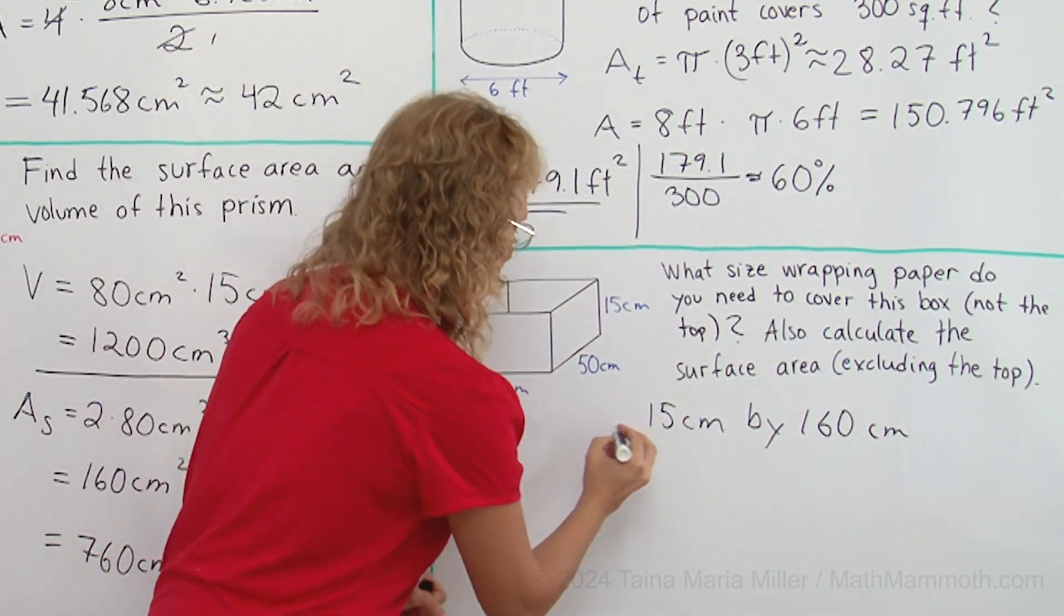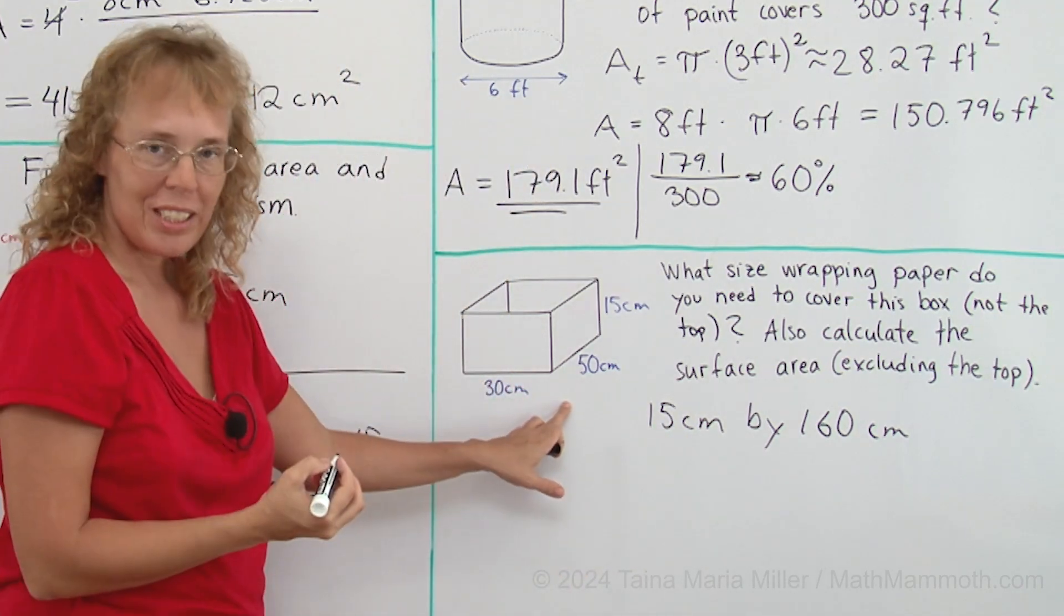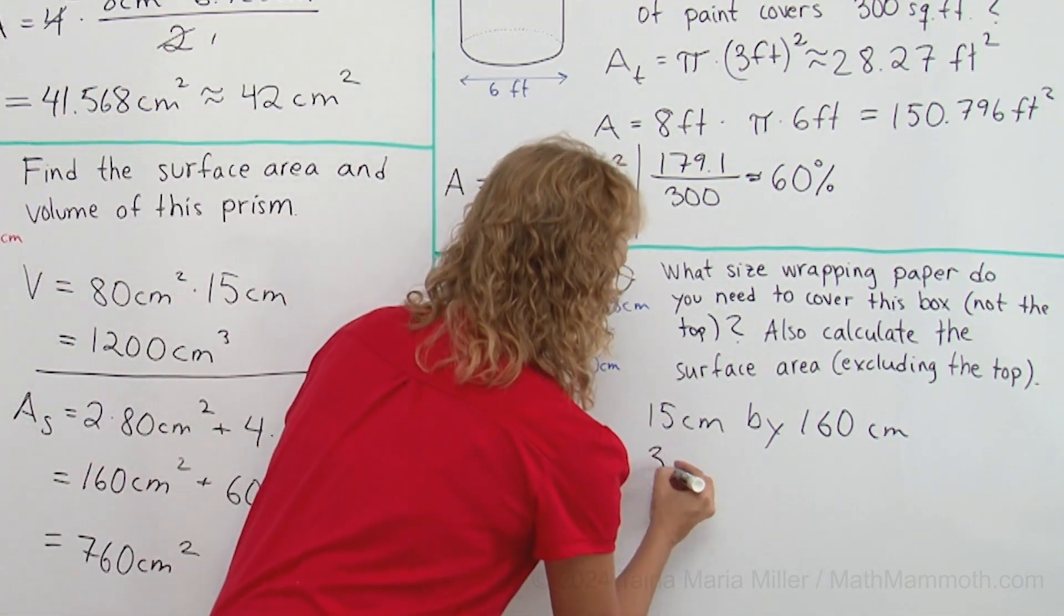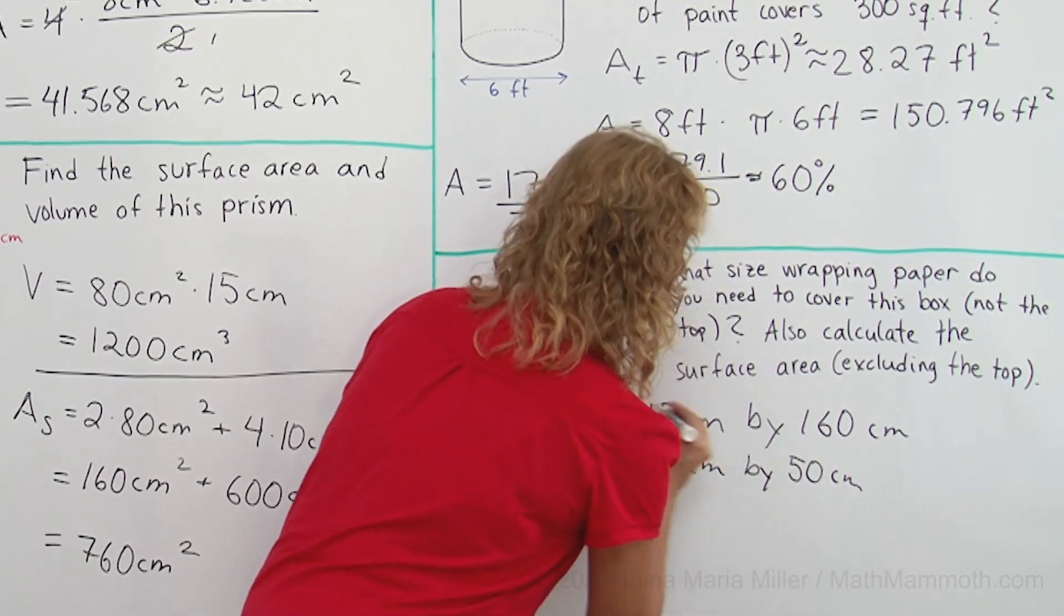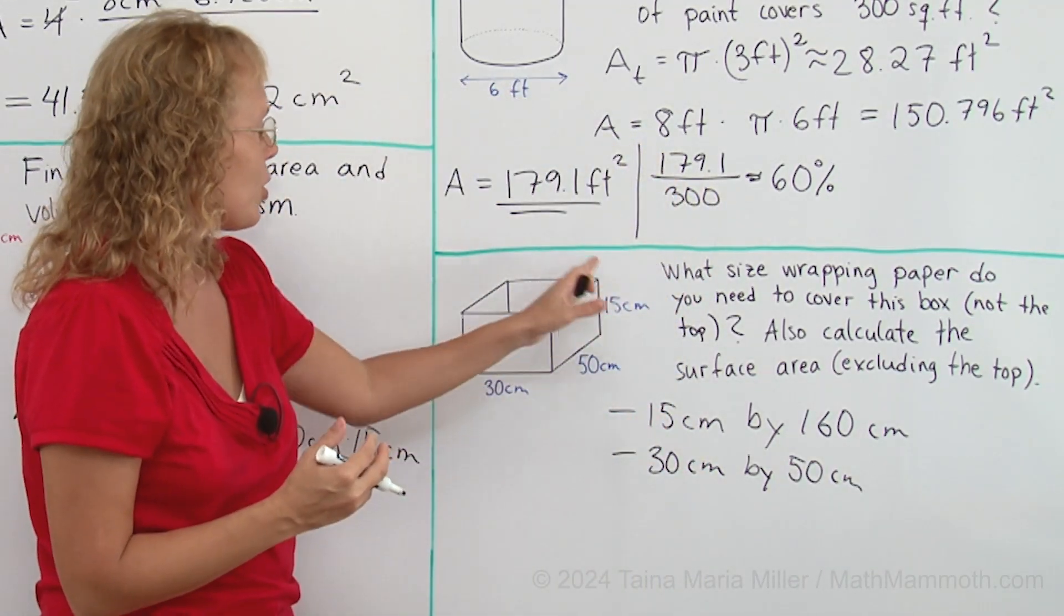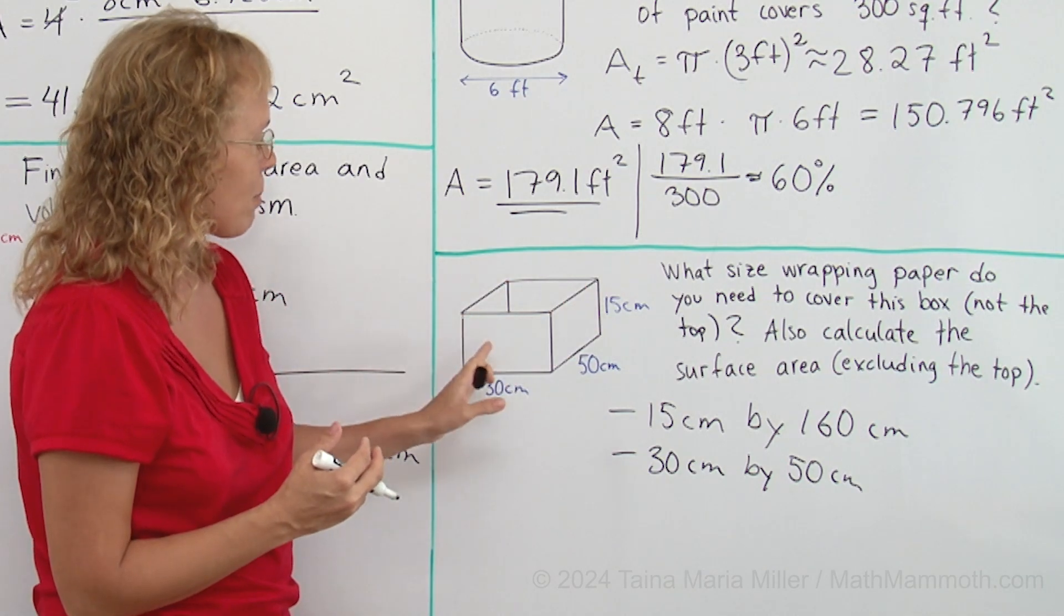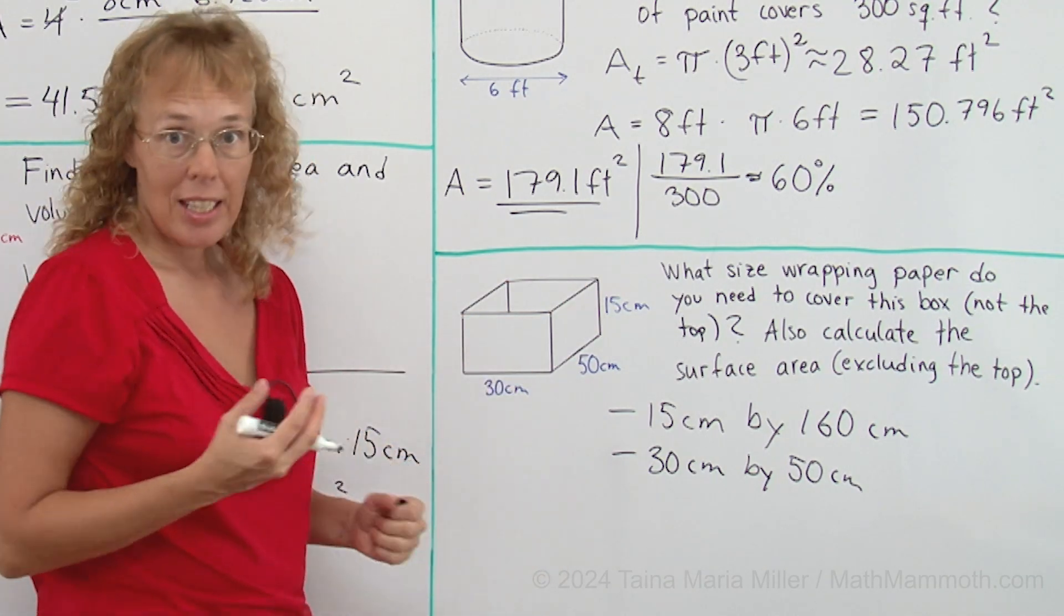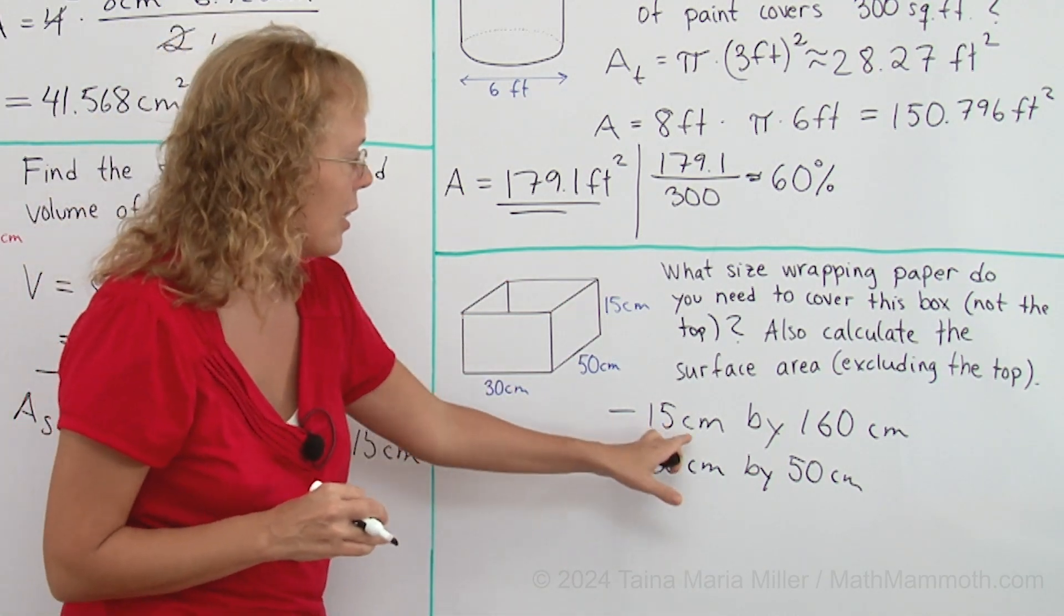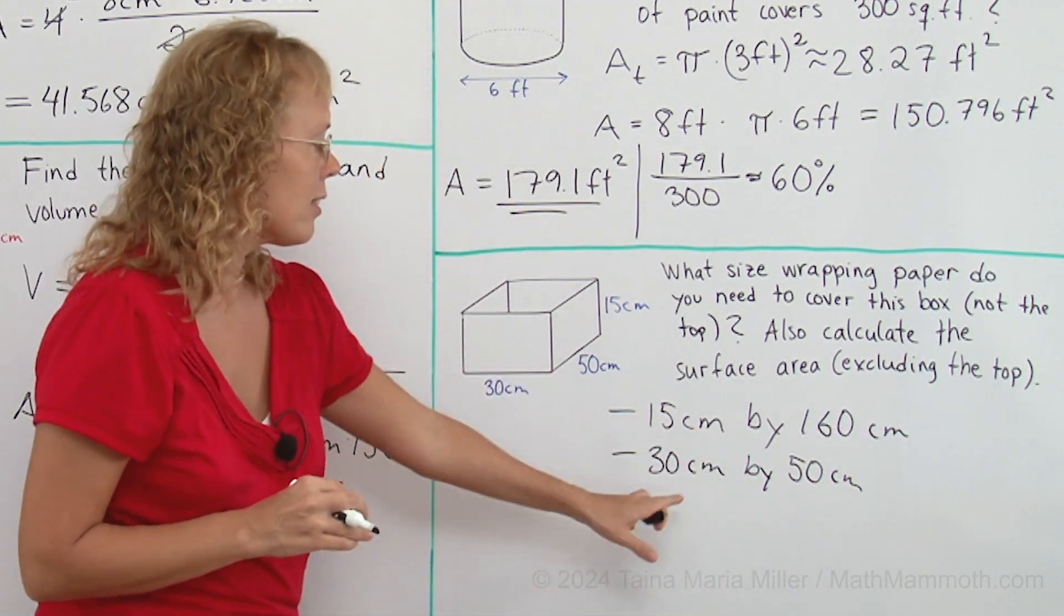Okay, and then the bottom, for the bottom you would need 30 times 50 piece. So two pieces of paper are needed to cover this box with wrapping paper. And then the surface area would be just this times this and this times this.